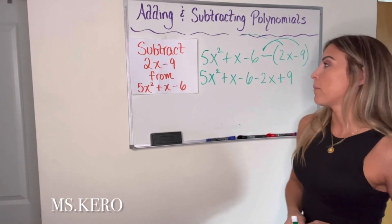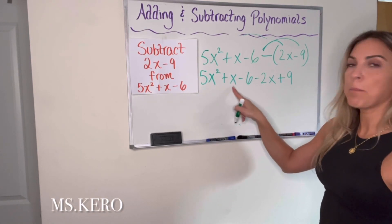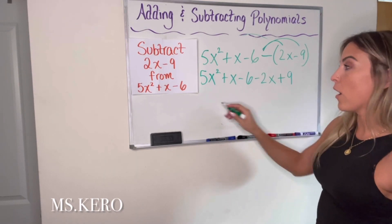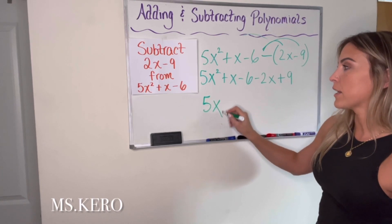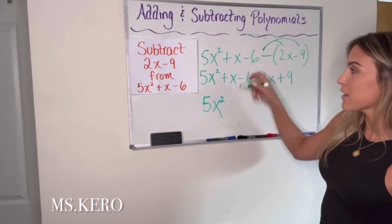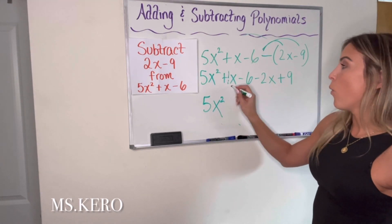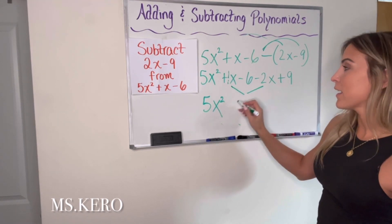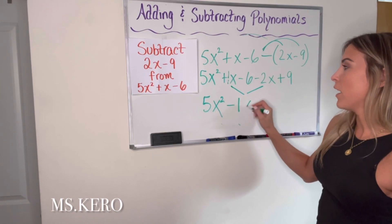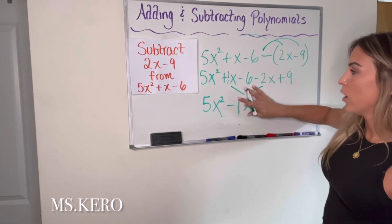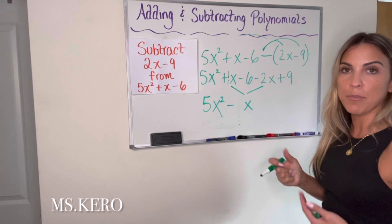And now I'm looking for like terms to combine. So 5x squared can't be combined with anything else up here. There's no other x squared terms. So I'm just going to leave it as 5x squared. My x, which is the same thing as 1x, can be combined with a minus 2x. So 1x minus 2x is negative 1x. You can also write it without the 1 in front, right? It's the same thing and more simply written.